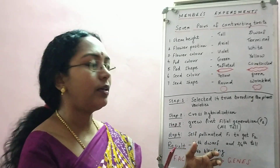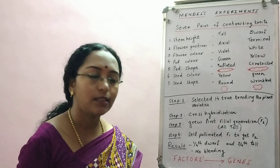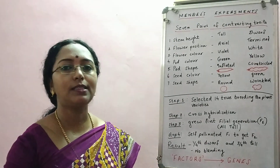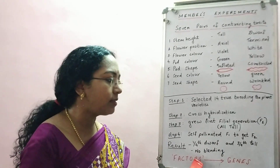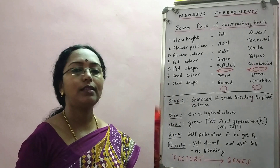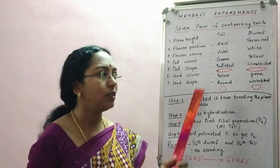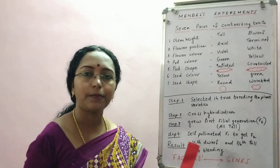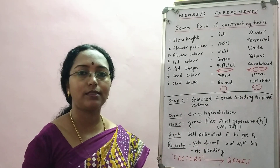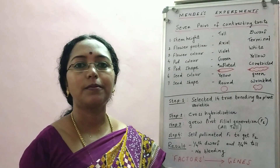With this general conclusion, he came to the notion that there are some factors present in the parent plant — expressed in one generation and suppressed in another. Those factors, which we now know as genes, were originally identified by Mendel. That is why he is truly regarded as the father of genetics. He did not end his experiments with just these four steps — he continued by changing the characters, and we will go through those experiments in the coming videos. Thank you.